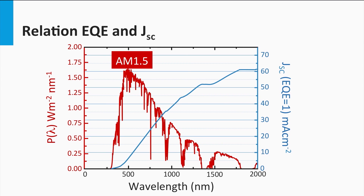In this graph, the spectral power density is shown in red. The blue line represents the theoretical short circuit current density at a wavelength lambda. It shows that up to a wavelength of 2000 nm, we could theoretically generate a short circuit current density of 62 milliamps per square centimeter. For crystalline silicon with a band gap of 1.12 eV, this equals a wavelength of 1107 nm, giving a theoretical current density of 44 milliamps per square centimeter.